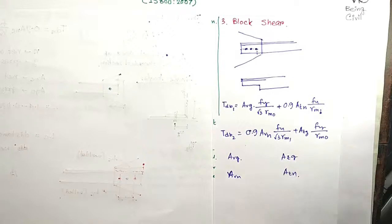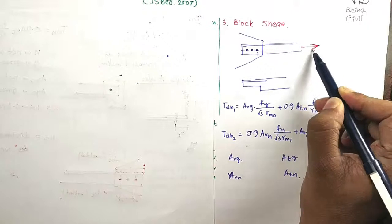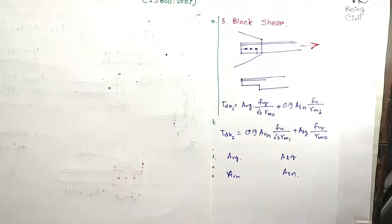G means gross, N means net. Now what is V for? V is along the force line. Suppose force is acting along this direction. This direction is called V. And perpendicular to this direction is T.